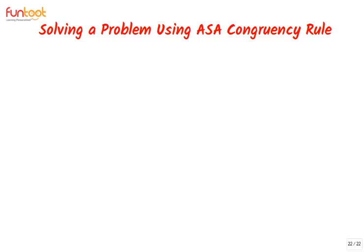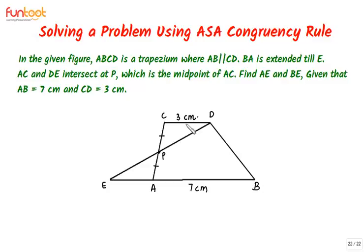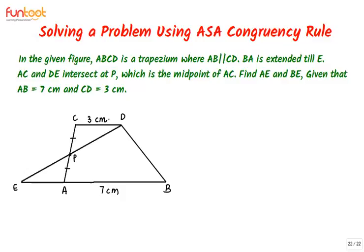Let's solve a question. ABCD is a trapezium in which AB is parallel to CD. BA is extended to point E. AC and DE intersect at point P, where P is the midpoint of AC — meaning AP equals PC. We have to find the measure of AE and BE, given that AB is equal to 7 centimeters and CD is equal to 3 centimeters.